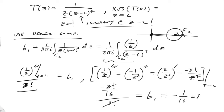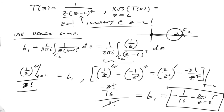So that is what we call the residue of our function T at Z equals 2. That is how we compute residues. Now that we have this terminology and some practice computing it, what we'll do next is show other important results that are discussed in terms of these residue values. Thank you very much.